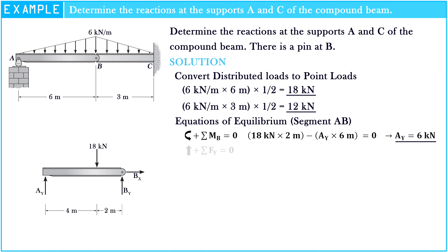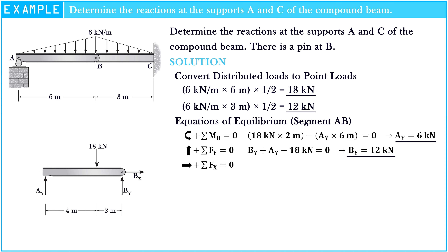The sum of forces along the y-axis is equal to zero. So: By plus Ay minus 18 kN is equal to zero. Hence, By is equal to 12 kN. The sum of forces along the x-axis is equal to zero. Hence, Bx is equal to zero.